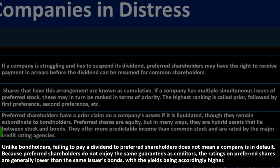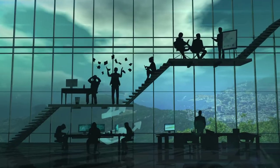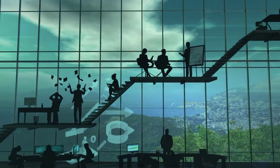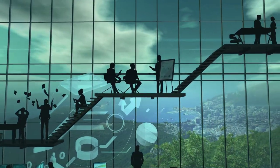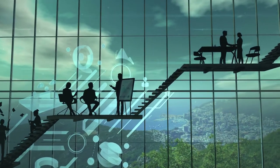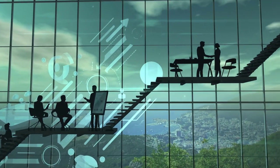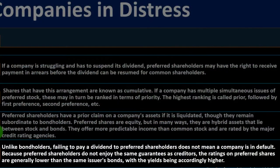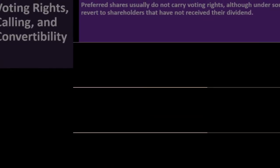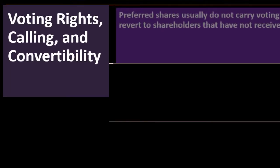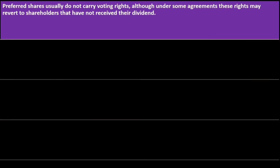Unlike bondholders, failing to pay a dividend to preferred shareholders does not mean a company is in default. If a company doesn't pay its bond obligations, it goes into default — that's not typically the situation with preferred stock, although the dividends in arrears situation may apply. Because preferred shareholders do not enjoy the same guarantees as creditors, the ratings of preferred shares are generally lower than the same issuer's bonds, with yields being accordingly higher.